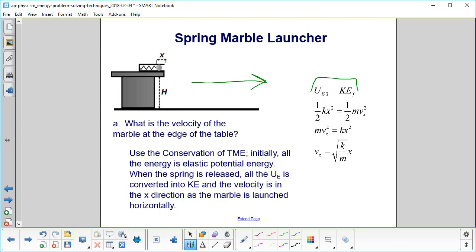Here's our conservation of energy: one-half kx² equals one-half mvₓ². Solving algebraically, we get the velocity in the x direction is the square root of k over m times x.